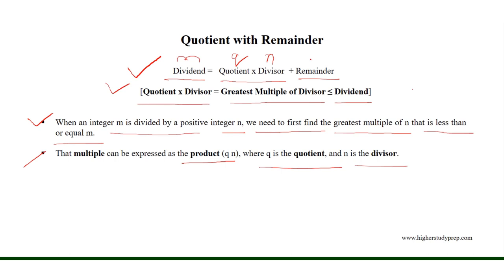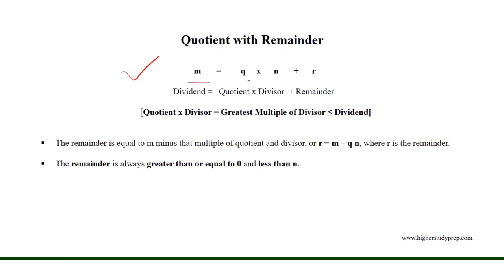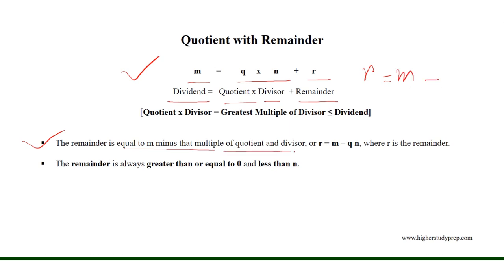If we represent the remainder as r, we can write m equals q times n plus r, where m is the dividend, q is the quotient, n is the divisor, and r is the remainder. Therefore, the remainder is equal to m minus that multiple of quotient and divisor, that is r equals m minus q times n, where the remainder is always greater than or equal to 0 and less than n, where n is the divisor.